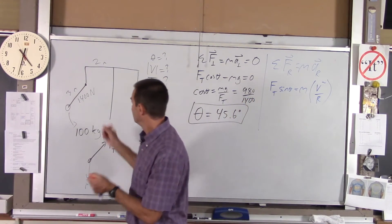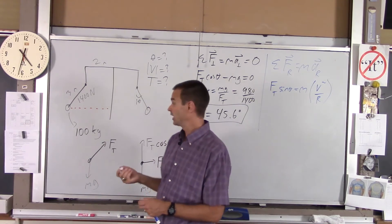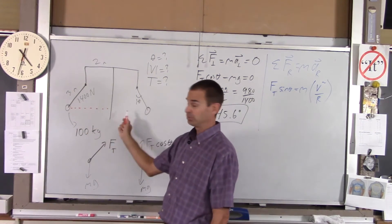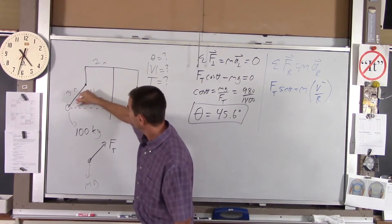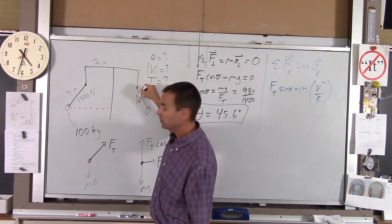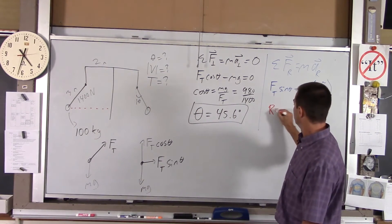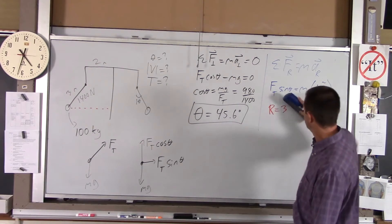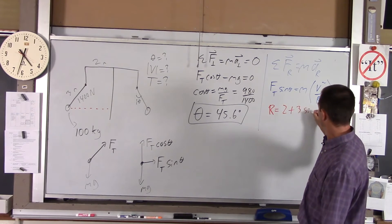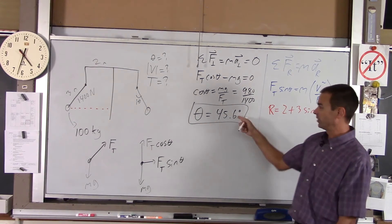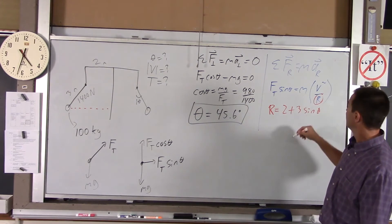Well, we need that distance there. That will give us the radius of the circle that that guy is making. Well, that radius is going to be 2 plus 3, and we want the opposite leg of this angle, so it's going to be 3 sine of theta. So the radius is 2 plus 3 sine of theta. And we know theta. It's 45.6. So now all we've got to do is put this in here and solve for V.